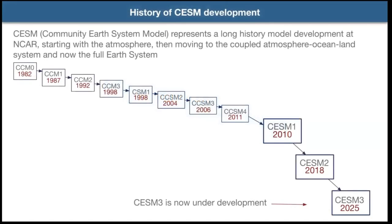CESM is a Community Earth System Model developed by NCAR in collaboration with many researchers around the world. It represents a long history of model development at NCAR going back to the early days of modeling, evolving from atmosphere-only configurations in the early 1980s to the full coupled system. In 2010 was the first release of CESM, with the name change reflecting that these models moved towards representing much broader aspects of the Earth system, such as ocean biogeochemistry and vegetation. We're now moving towards the next generation, CESM3, scheduled for release sometime next year.